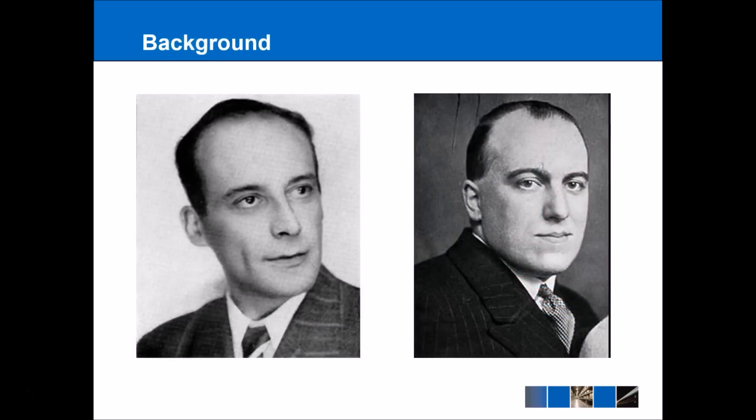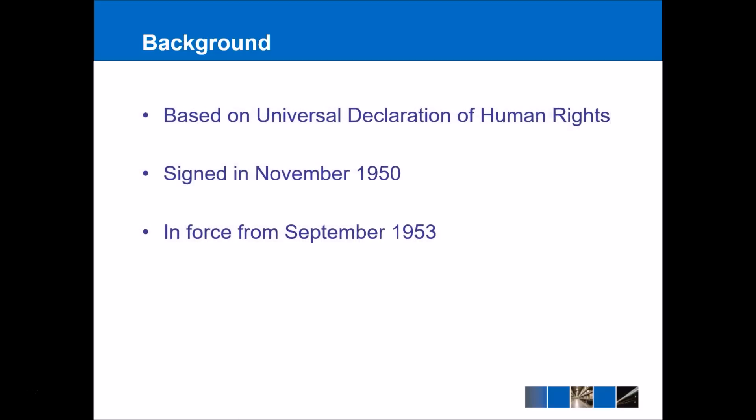Two key figures were involved in the establishment of the convention. On the left we have Sir David Maxwell Fyfe, who was a prosecutor against Nazi war criminals, so he knew about the atrocities first-hand. On the right we have Pierre-Henri Taitgen, who was a French resistance fighter and knew a lot about Nazi governance. With this in mind, the convention was based on the Universal Declaration on Human Rights, which was an American creation made after World War II. In some areas it's more expansive, in some areas less, but it's basically the European version of that.